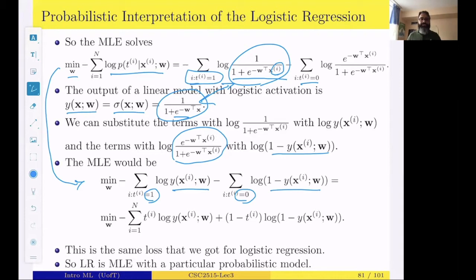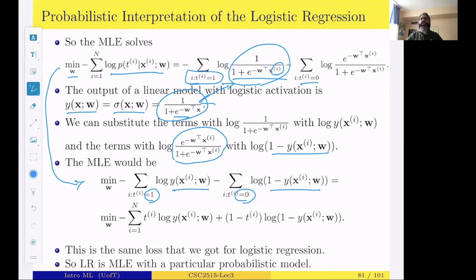A student asks: is this problem still convex, given that we now have a logistic activation? Yes, that's a good question. It is convex — I haven't shown the proof here, but it can be shown that solving this problem, which is the same as logistic regression, turns out to be a convex optimization problem.